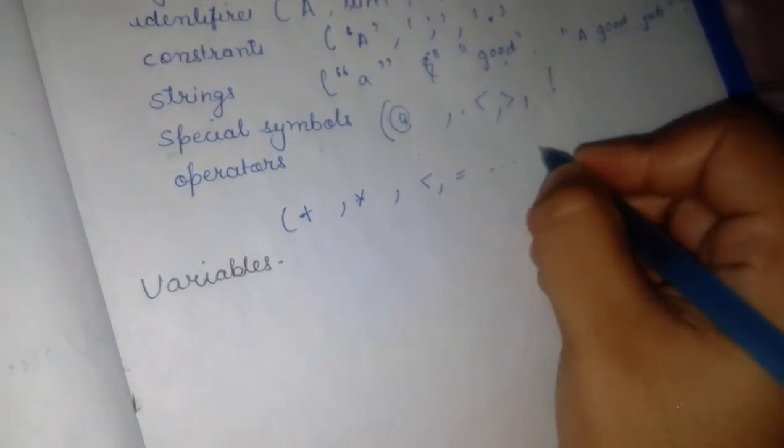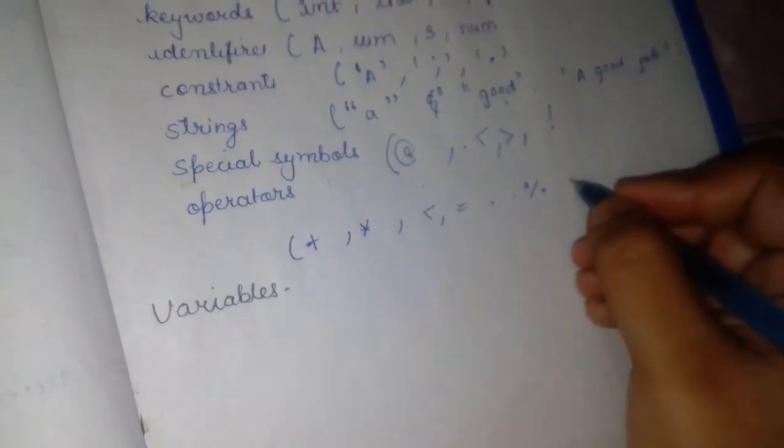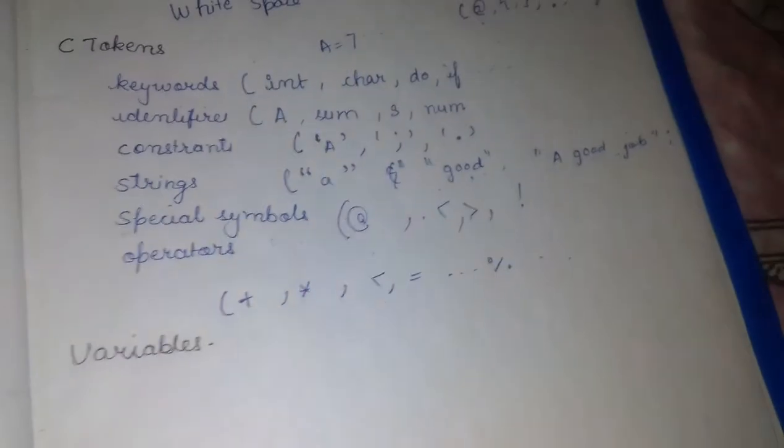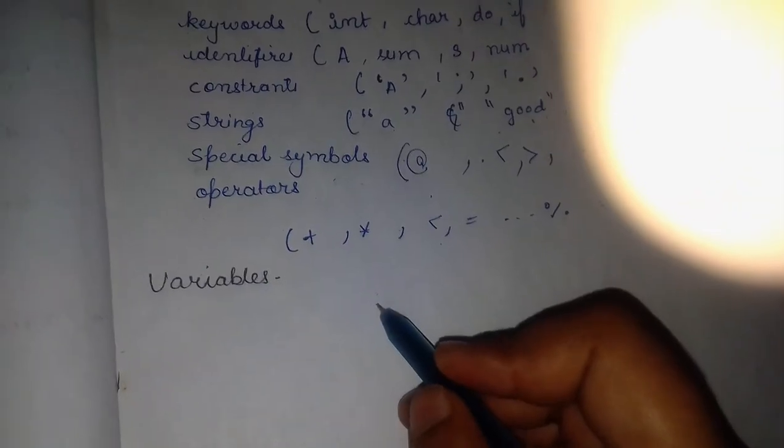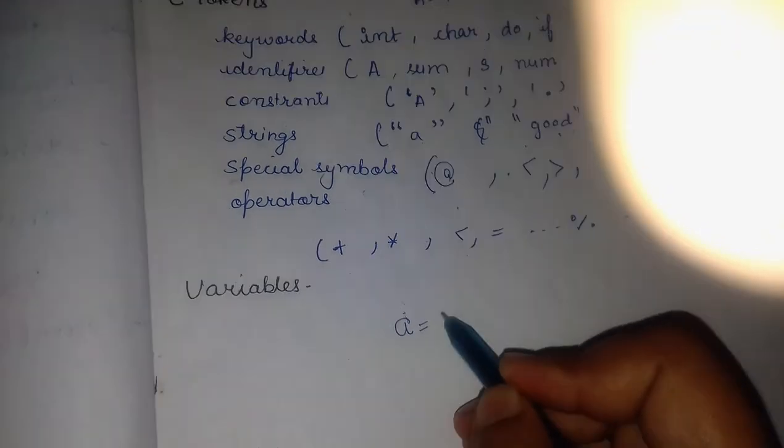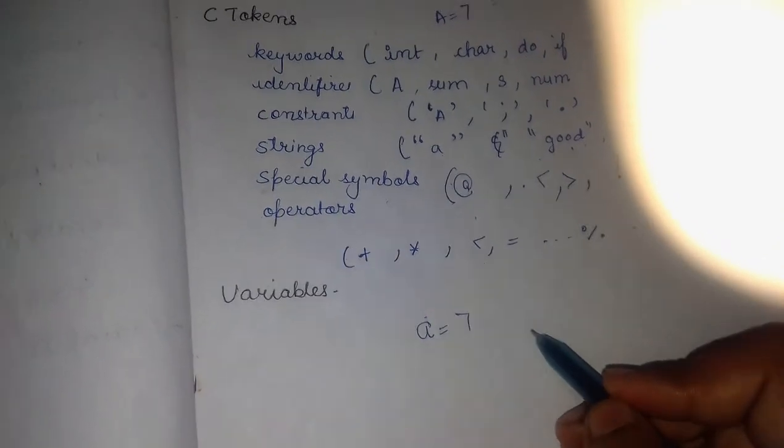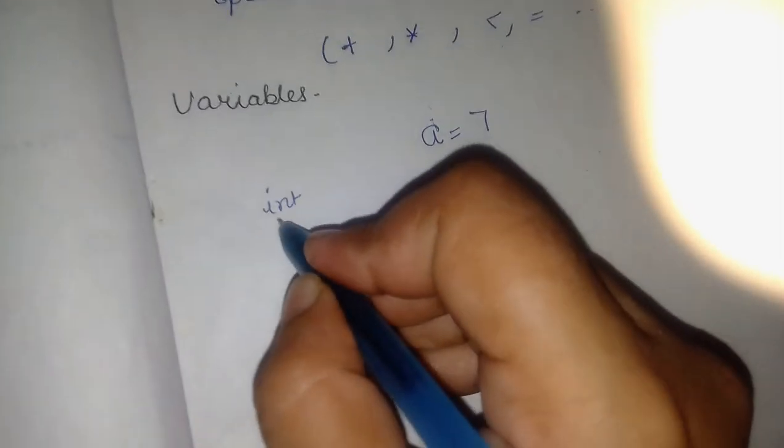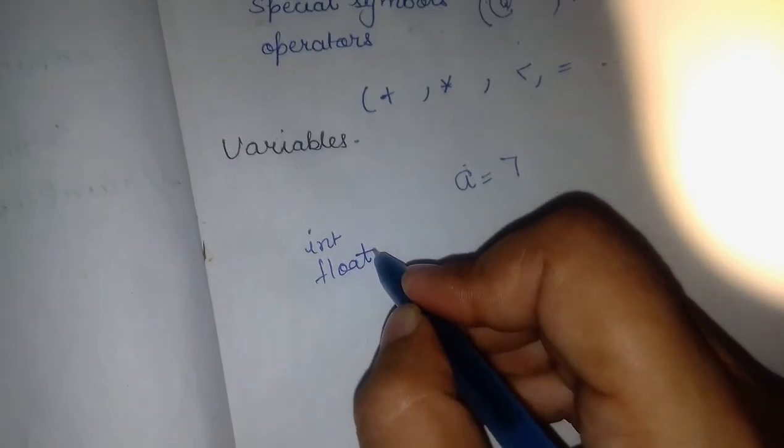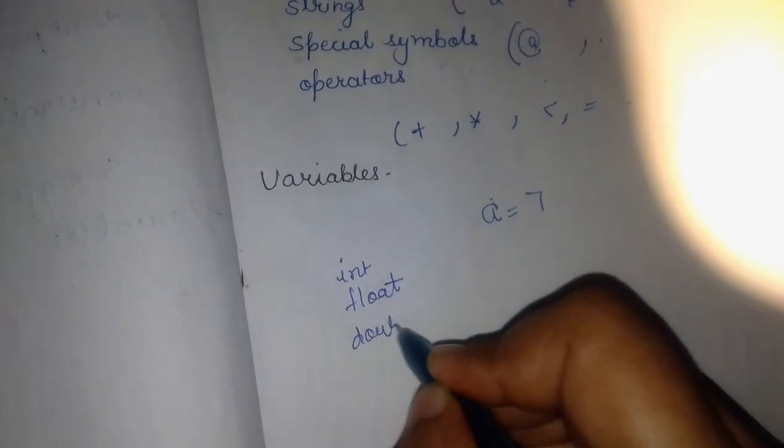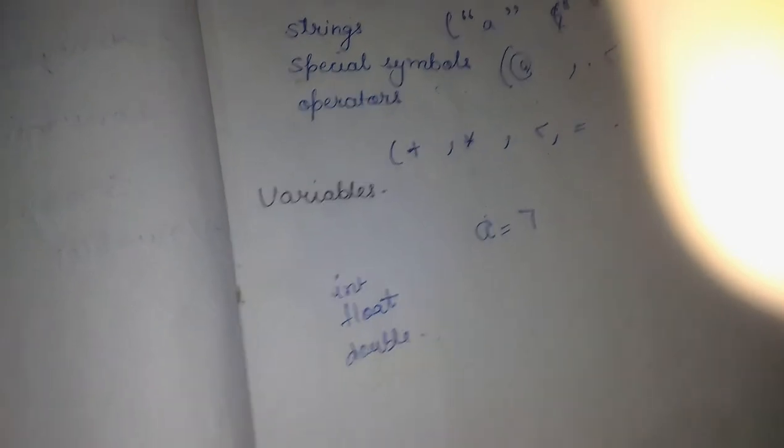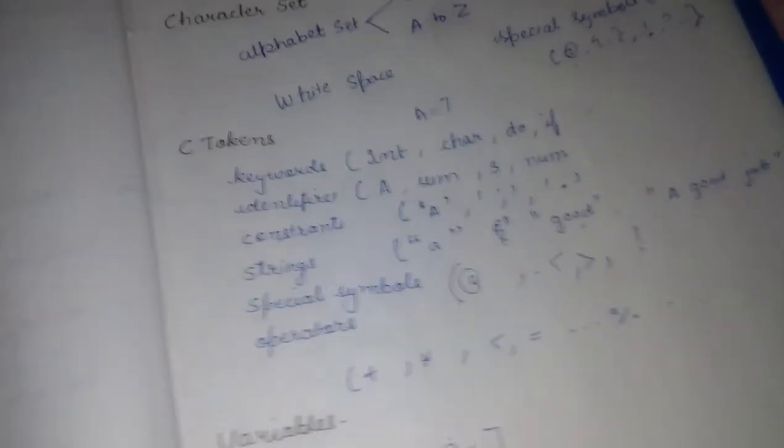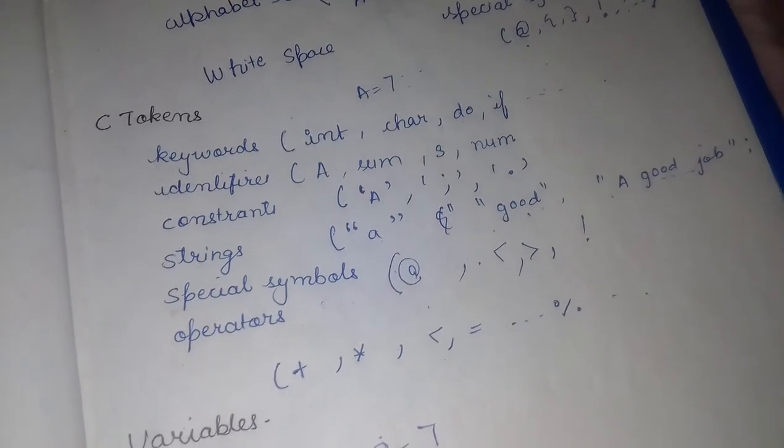Then we have variables. Data can be stored in variables, like a equals to 7. Variables can be of integer type, float type, double, etc. I will explain this in brief in my next video.